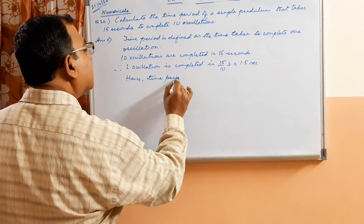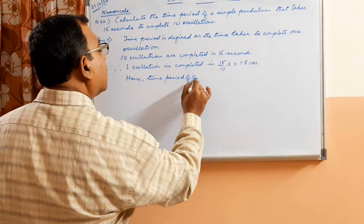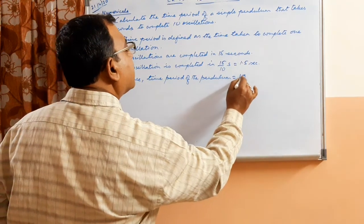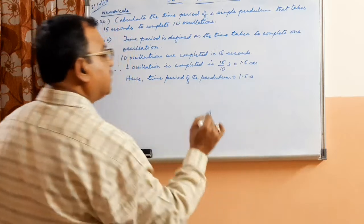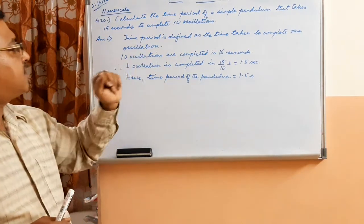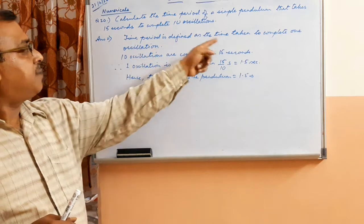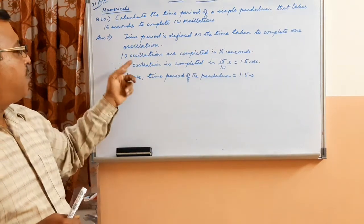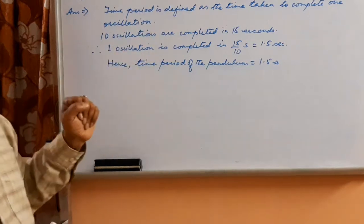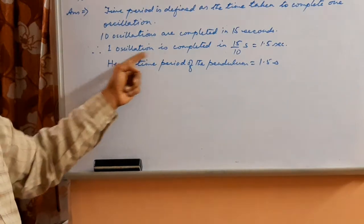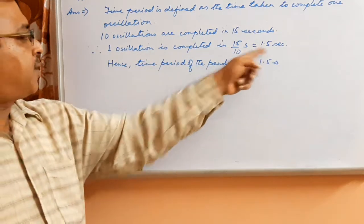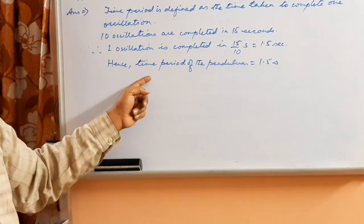Hence, time period of the pendulum is 1.5 seconds. Clear? So time period, first of all you should write the definition. Here the time period is defined as the time taken to complete one oscillation, then you solve. So 10 oscillations are completed in 15 seconds according to the question, so one oscillation is completed in 15 by 10 seconds using unitary method, so you get 1.5 second as the time period of the pendulum.